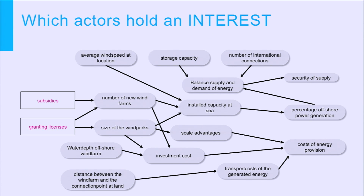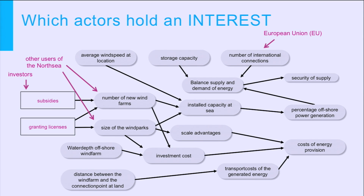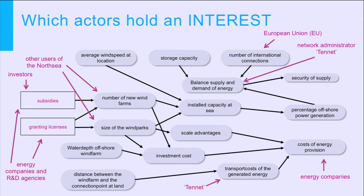Now we turn to the interest part. We ask: who holds an interest in the project, or who will be affected? When looking at the means, it is the investors, energy companies, and project developers who hold an interest in speeding up permits and getting subsidies. We also discover new parties — other users of the North Sea: fishermen and their organisations, the offshore oil industry, shipping companies and harbour authorities, who all worry about shipping lanes and freedom of access. Familiar faces return too: the EU with its international connections, Tenet with stakes in security of delivery and transport costs, the energy companies worrying about cost, and the Ministry of Infrastructure and Environment worrying about the percentage of wind in the energy mix.